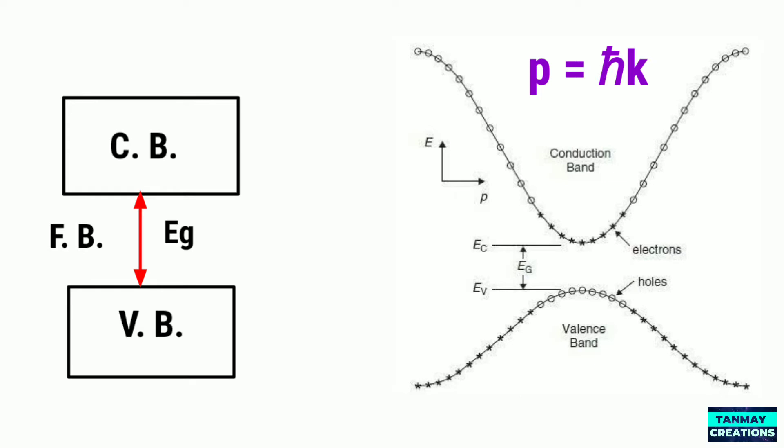The diagram indicates how the actual electron states are equally spaced in K-space, which means that the density of states depends on the slope of this EK curve.